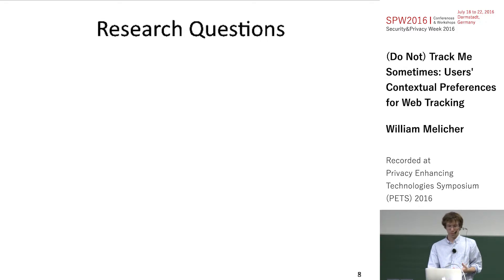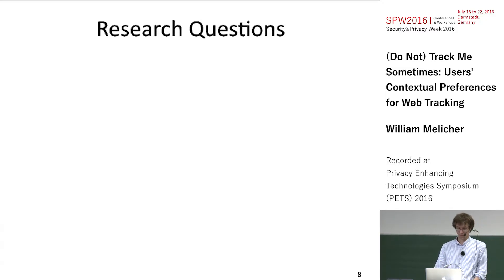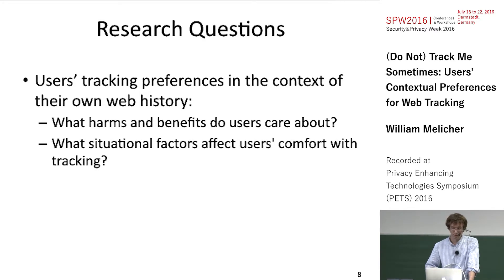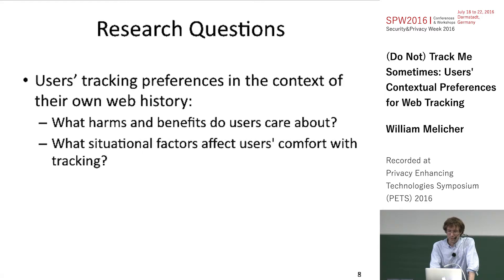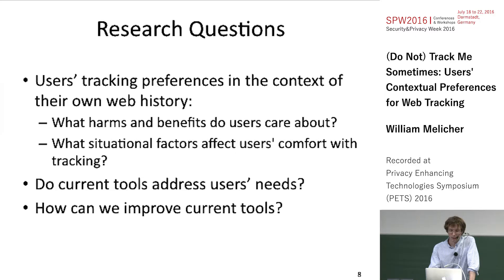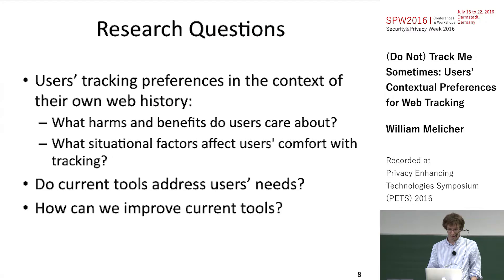In order to improve current tools, it's critical to know users' preferences for tracking in the context of their own browsing history. Part of this is understanding what harms users care about and what situations they would prefer to not be tracked or to be tracked. Once we have a precise understanding of what users want, we can look at current tools to understand to what extent they satisfy users' needs, and we might have enough information to design new, better tools.